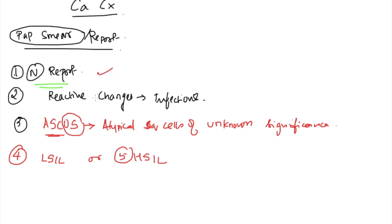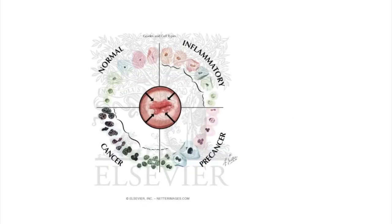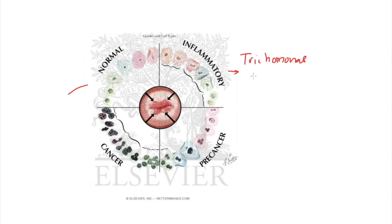Reactive changes mean inflammatory changes. Infections that can be identified from a pap smear report include trichomonas (you can see trophozoites), HSV (characteristic cellular changes when a cell is infected by herpes virus), candida (yeast forms are visible), and actinomyces.